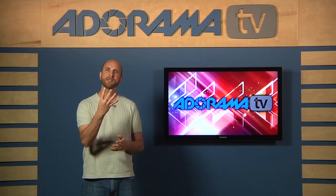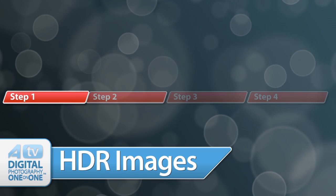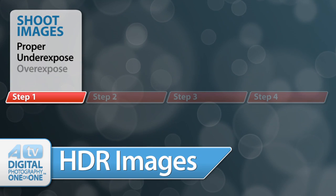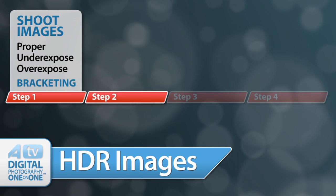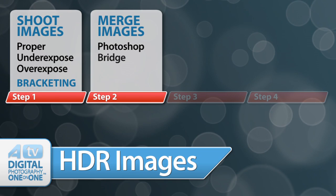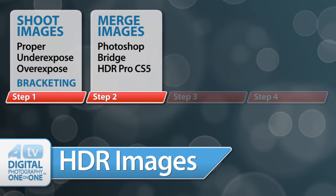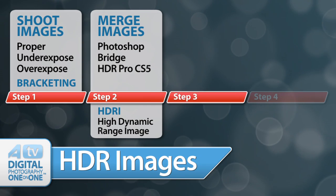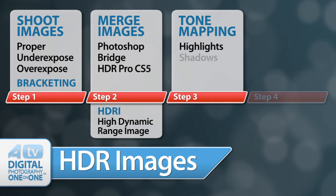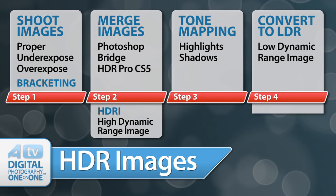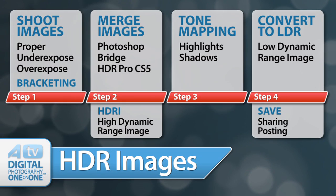It can be broken down into four steps. Step one is to shoot your images. You'll need to shoot one shot at the proper exposure, and then at the very least underexpose one shot and overexpose another — this is called bracketing. Step two is to merge those images using software like Photoshop and Bridge, specifically HDR Pro built into Photoshop CS5. In step two you have the option to save what is called an HDRI image. Step three is to do your tone mapping, where you tell your software how to apply highlights and shadows. Step four is to convert that HDRI image to an LDR image, a low dynamic range image, and then save your image so you can share it.